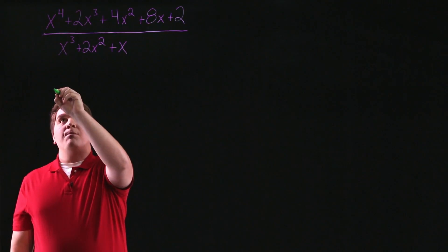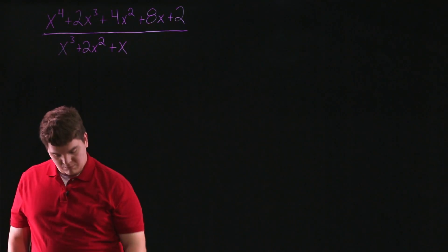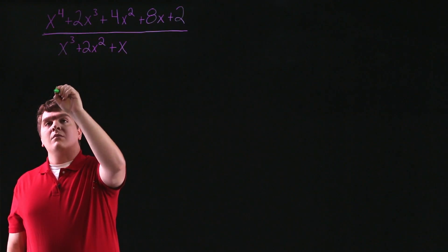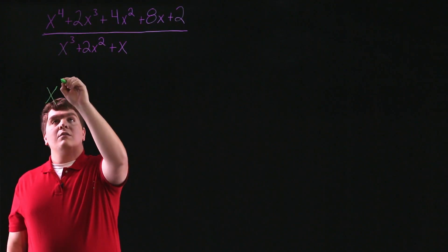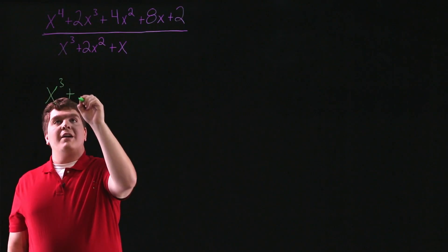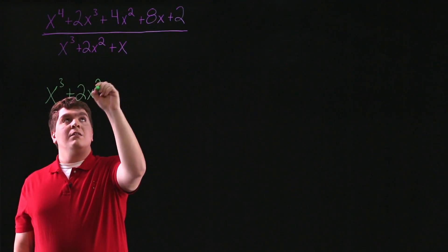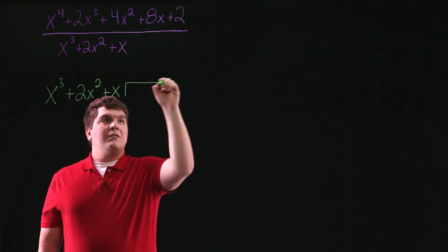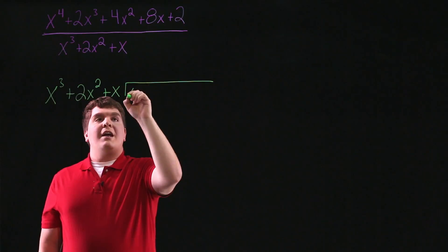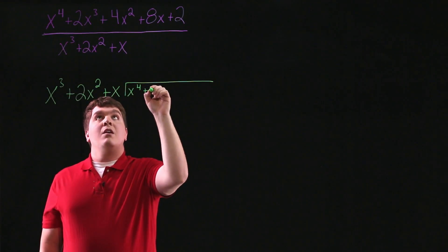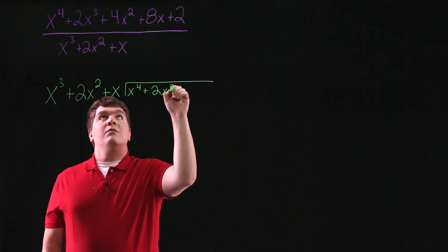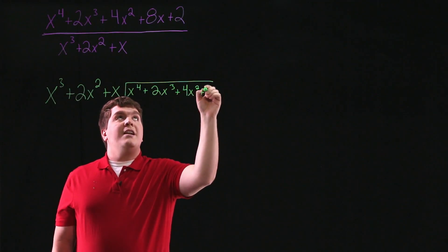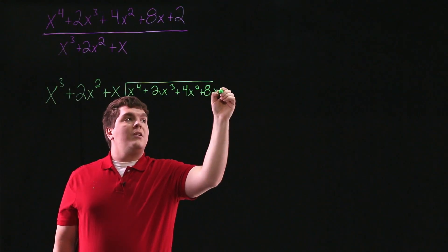So we want to find this quotient. We'll begin by writing x cubed plus 2x squared plus x, and we are dividing x to the fourth plus 2x cubed plus 4x squared plus 8x plus 2.